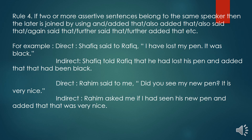Rule number four. If two or more assertive sentences belong to the same speaker, then the latter is joined by using 'and', 'added that', 'also added that', 'also said that', 'again said that', 'father said that', 'father added that', etc. For example, Shafiq said to Rafiq, 'I have lost my pen. It was black.' The answer will be: Shafiq told Rafiq that he had lost his pen and added that that had been black.